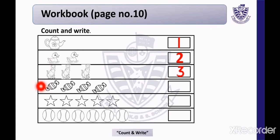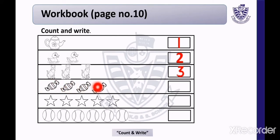Now next row — this is a picture of candies. Do you like candies? I like candies too! Now count these candies with me — 1, 2, 3, 4. There are 4 candies. Now write number 4 in the given block.